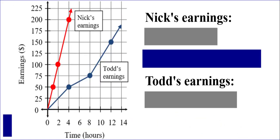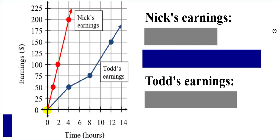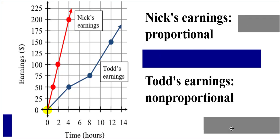How about this one? Can you tell which one is a proportional relationship? This time, both graphs — Nick's earnings and Todd's earnings — go through the origin. But only Nick's earnings happens to be a straight line, so that makes Nick's earnings the proportional relationship, and Todd's non-proportional.